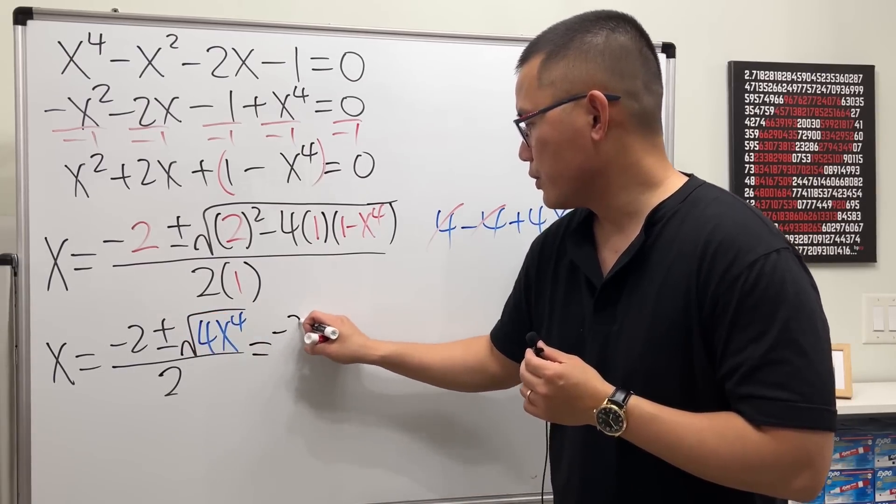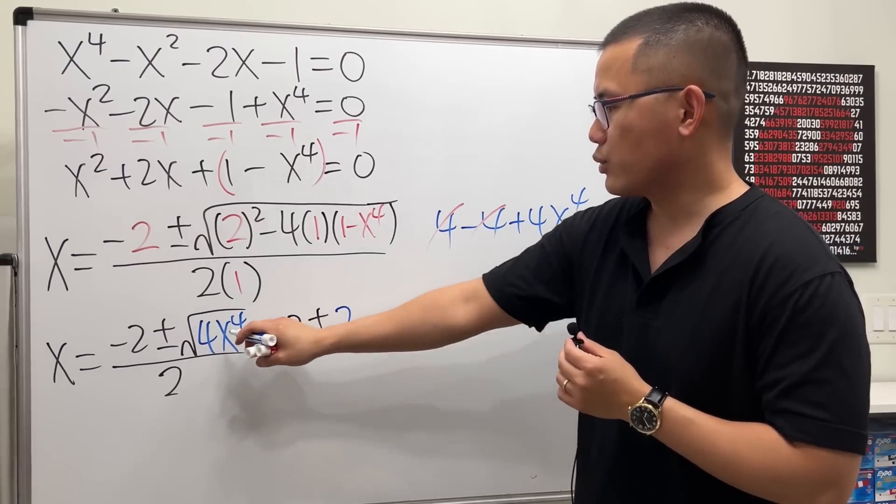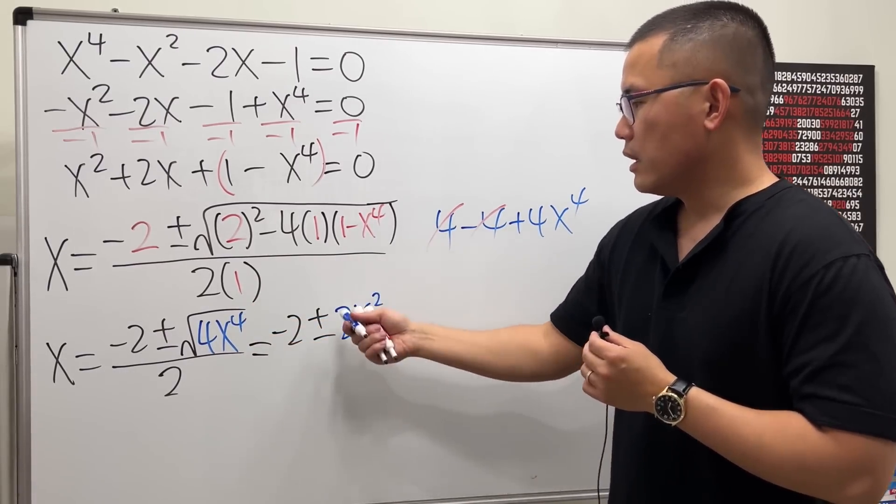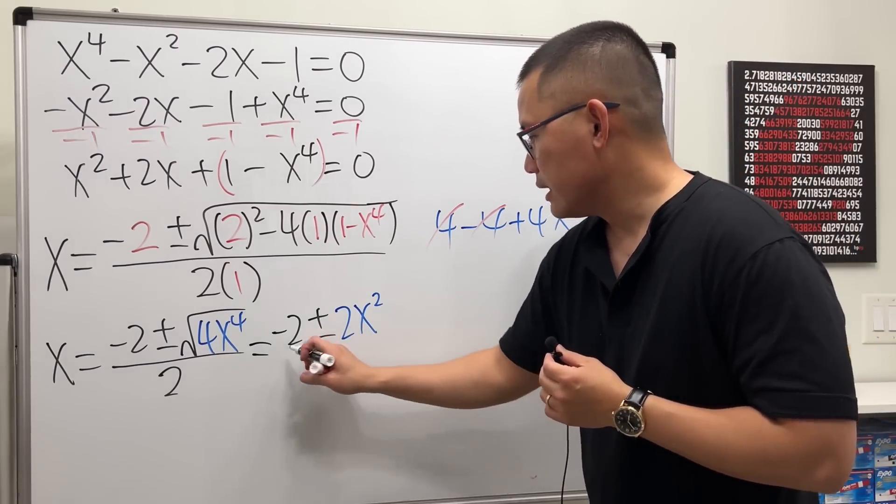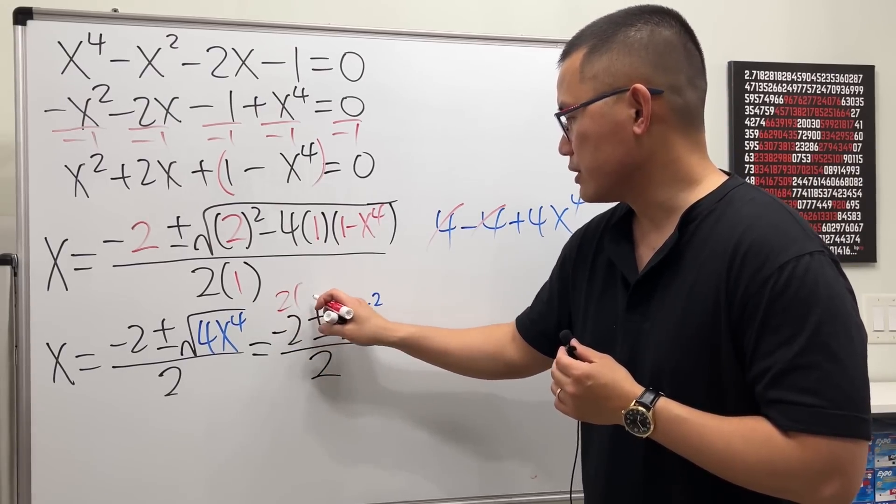And then all over 2. And then we can simplify this a little bit. This right here is of course equal to negative 2 plus or minus, square root of 4 is 2, and then square root of x to the fourth power is x to the second power. Don't worry about absolute value or anything because there's a plus minus here already.